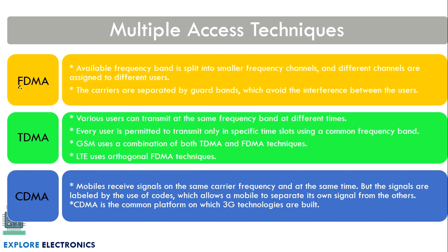In FDMA, the available frequency bandwidth is split into smaller frequency channels and different channels are assigned to different users. Carriers are separated by guard bands. In TDMA, the same frequency band is used with different time slots — every user is permitted to transmit only in a specific time slot using a common frequency band.